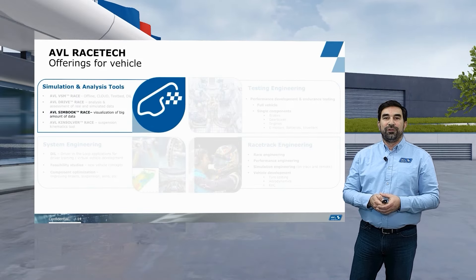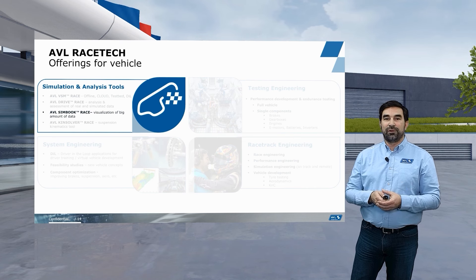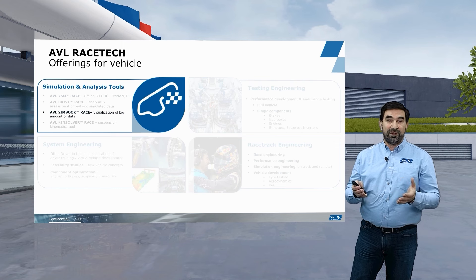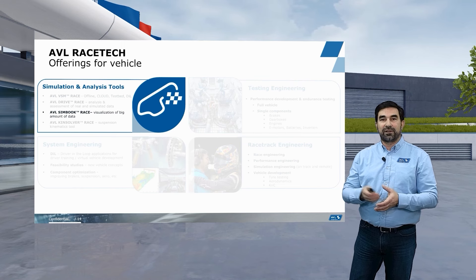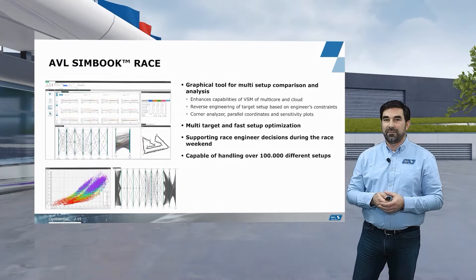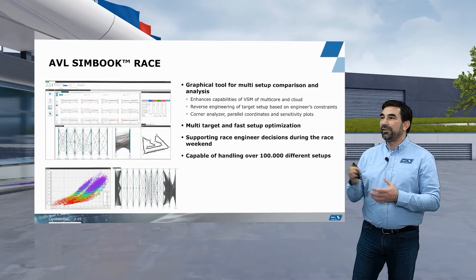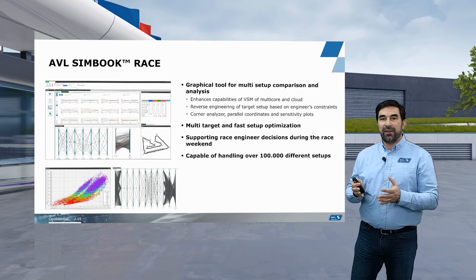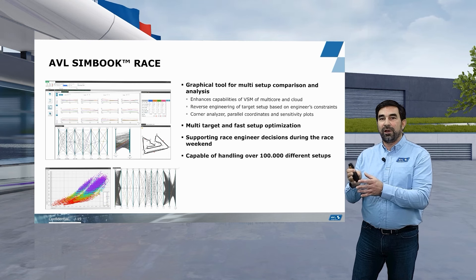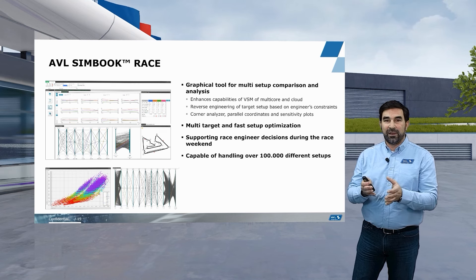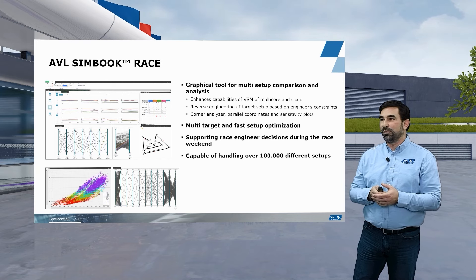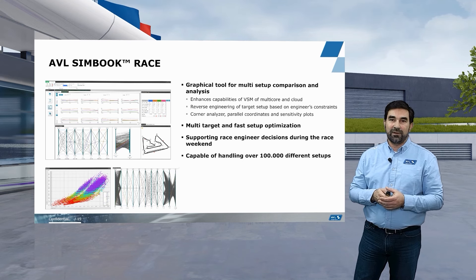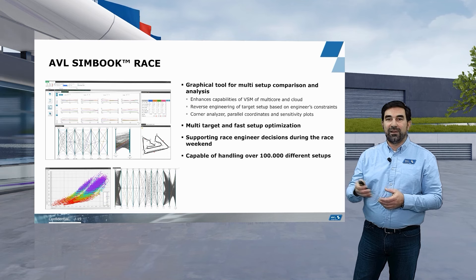The next software I would like to introduce is AVL Simbook Race. This software was devised after we started with cloud computing. Cloud computing enabled us to create huge amounts of simulation data within a very short timeframe, but the question emerged: how do we make sense of those data and help the race engineer at the racetrack find the correct direction for his setup? Simbook is a graphical tool that enables you to compare multiple setups and analyze them. One particular strength of Simbook is that, as the engineer, you can define what your desired outputs should be — for example, the mechanical balance, handling, or understeer gradient of your race car — and the system will then tell you what inputs are required on the setup side to achieve exactly those outputs. So it is a multi-target, fast setup optimization, particularly designed to help the race engineer at the racetrack on the weekend to make good setup decisions.